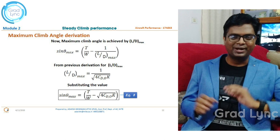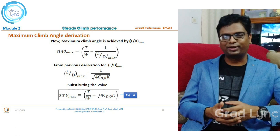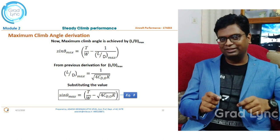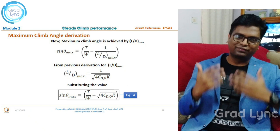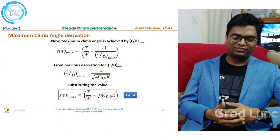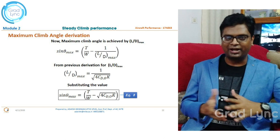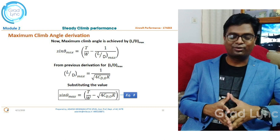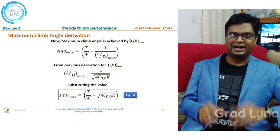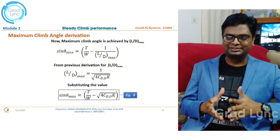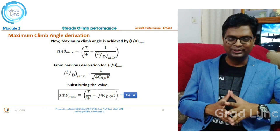Since thrust-to-weight ratio is constant for a given aircraft and velocity, the angle of climb is maximum when flying at L/D_max. From previous analysis, L/D_max = 1 / √(4·CD0·k). Substituting this back into the equation gives Equation 8 for maximum angle of climb: sin θ_max = T/W − √(4·CD0·k).